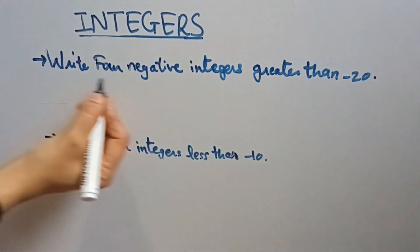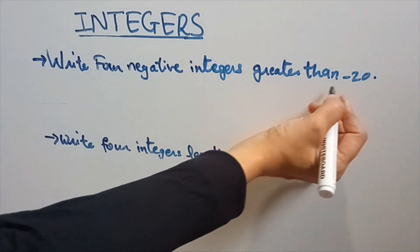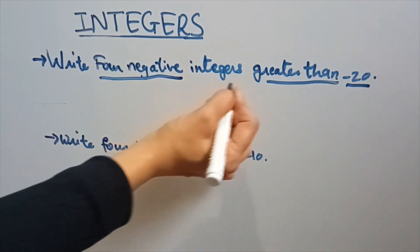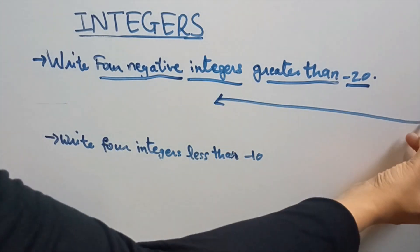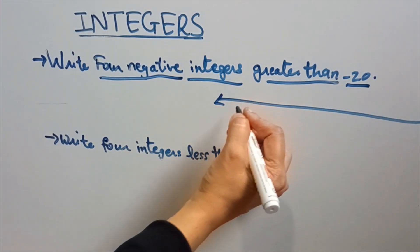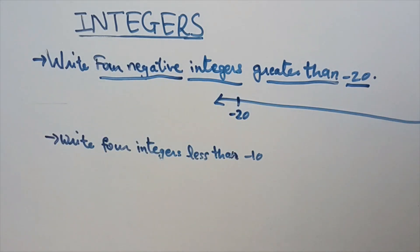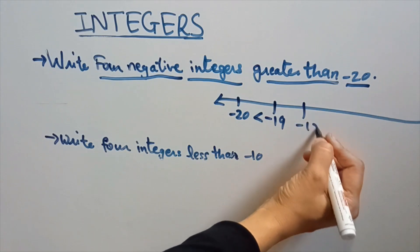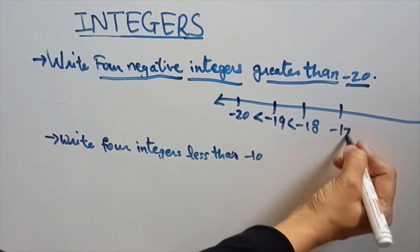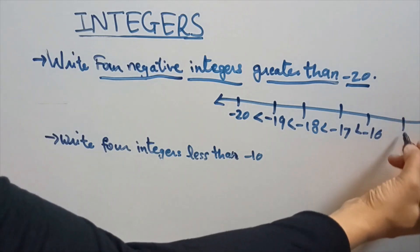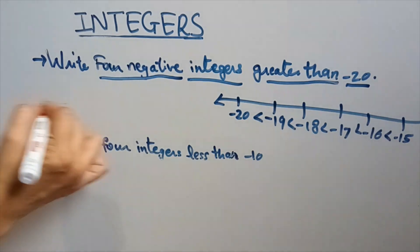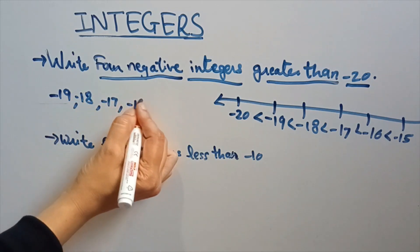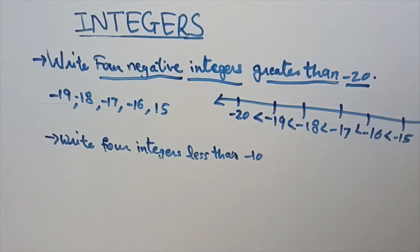Write 4 negative integers greater than minus 20. On the number line, suppose minus 20 is here — we have to write 4 negative integers greater than minus 20. So: minus 19 is greater than minus 20, then minus 18, minus 17, minus 16, and minus 15. So the numbers are minus 19, minus 18, minus 17, minus 16, minus 15 — these are 5 negative integers greater than minus 20.